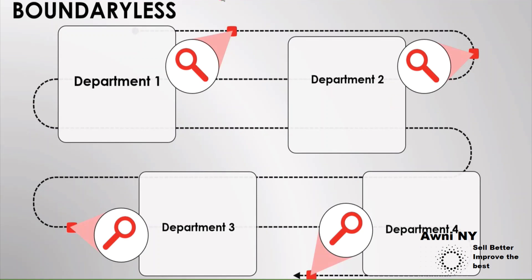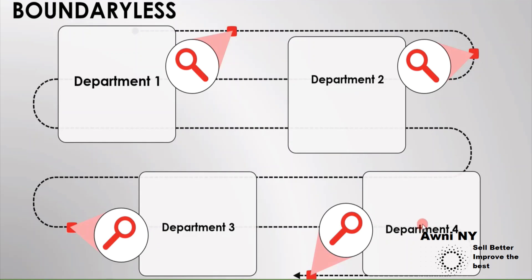The next philosophy is boundaryless. It means we shall not restrict ourselves to one particular department. This is because input to our department comes from another department, and that is why we need to have integration with other departments. Similarly, your department's output will be some other department's input. Therefore, instead of boundaries, we should have interactions between departments.